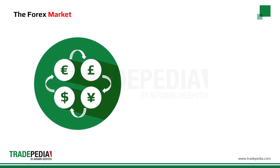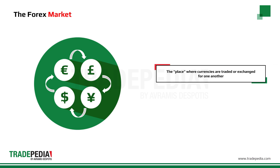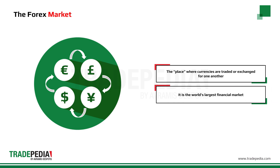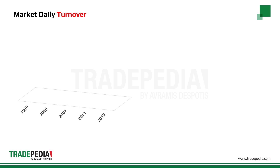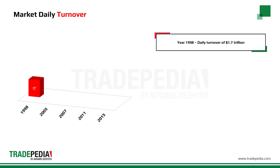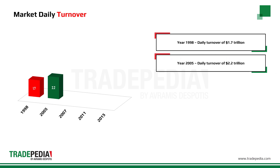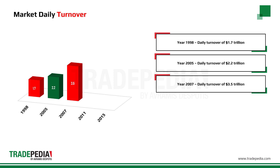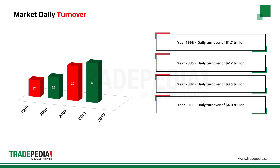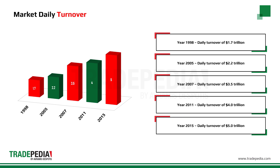The foreign exchange market, or Forex market, is simply the place where currencies are traded or exchanged for one another. It is the world's largest financial market in terms of volume traded. The average daily turnover in the global foreign exchange is continuously growing, starting with $1.7 trillion in 1998. The daily volume increased to $2.2 trillion in 2005, reached $3.5 trillion in 2007, and was $4 trillion by 2011. From 2015 onwards, it has surpassed $5 trillion turnover per day.